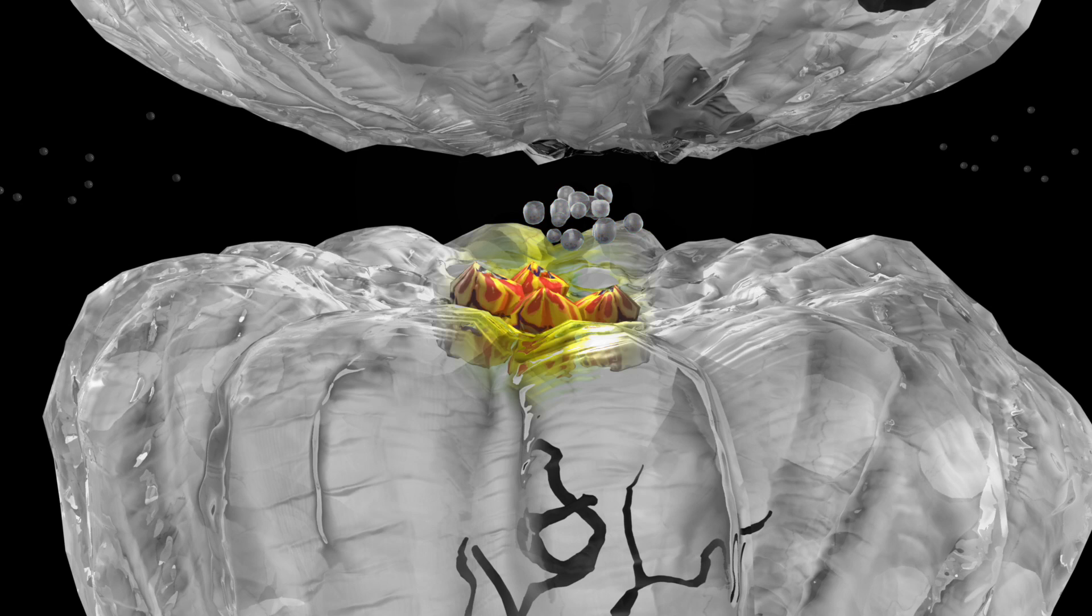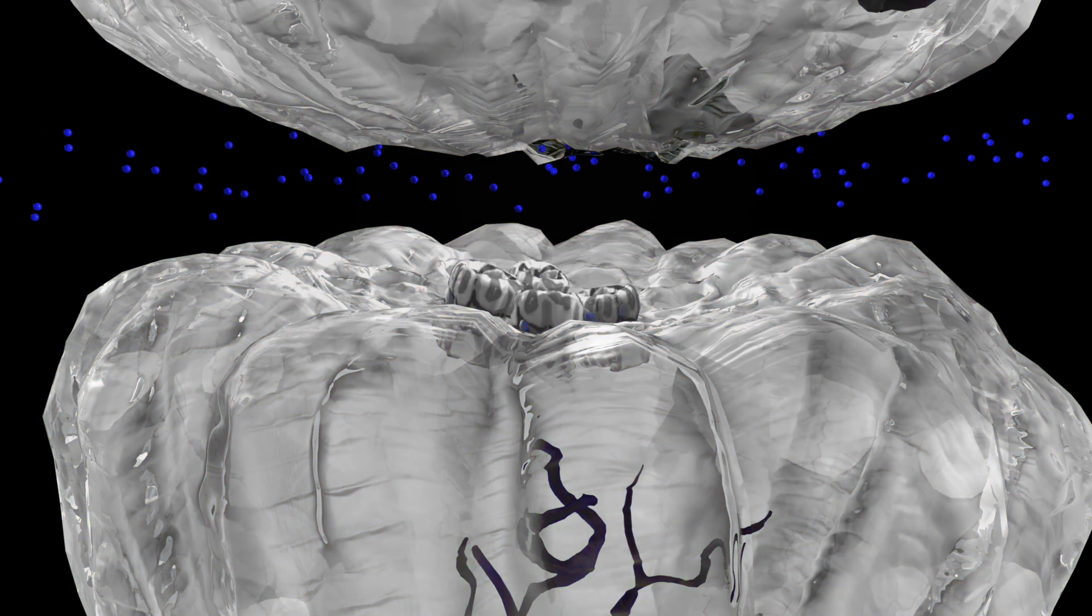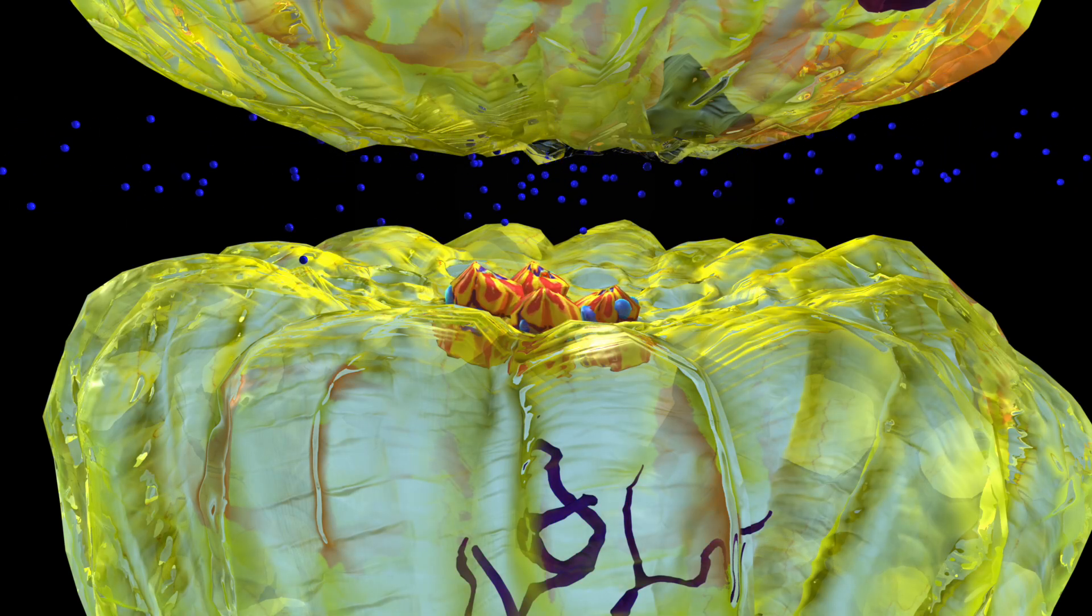This is the GABA receptor. When GABA binds, it opens up the receptor and allows chloride to enter. This is chloride. This negatively charged ion stops the electrical signal.